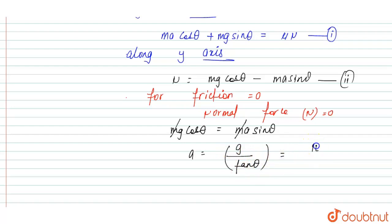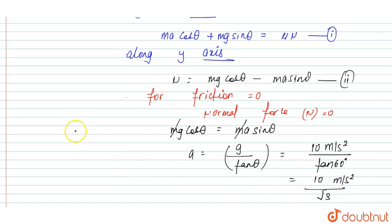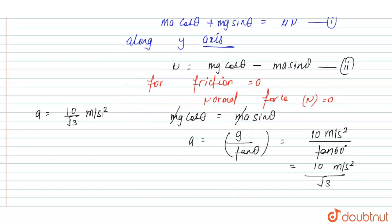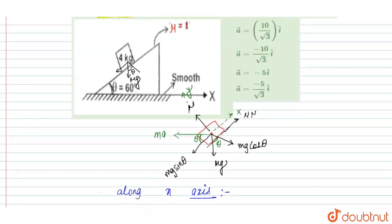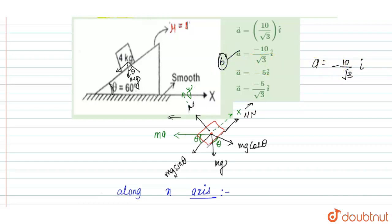Since g is 10 m/s² and tan(60°) equals root 3, the acceleration A equals 10 divided by root 3 m/s². Considering the assumed direction of acceleration as the positive x-axis direction, the acceleration A equals 10 by root 3 in the i-direction. Therefore option B is the correct answer to this question.